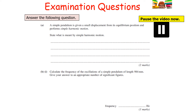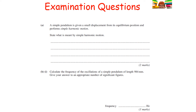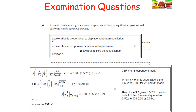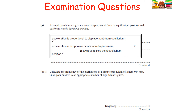Simple harmonic motion is defined as: acceleration is proportional to the displacement from equilibrium, but the acceleration acts in the opposite direction to the displacement. For a simple pendulum of length L, T = 2π√(L/g). Converting 984 mm to metres: T = 2π√(0.984/9.81) ≈ 1.99 seconds. Frequency f = 1/T = 1/1.99 ≈ 0.503 Hz, given to three significant figures to match the data.